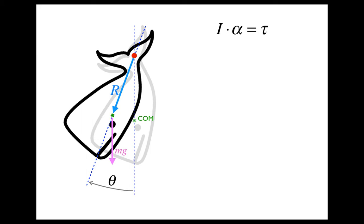The first thing I'm going to do is replace alpha with d squared theta by dt squared. On the right-hand side we need to write down torque, and remember that torque equals R F sine theta. We have R, the force is mass times gravity, and sine theta. The minus sign comes from the fact that theta is a counterclockwise rotation while the acceleration of the whale is clockwise — they are in opposite directions, so we need a minus sign to show that the displacement angle and the acceleration have opposite signs.